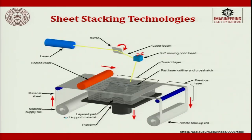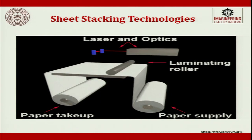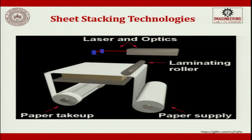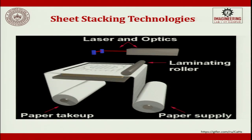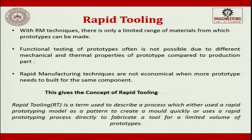Excess material in the layer remains in place to support the part being built. Sheet stacking technology was earlier popular but is now slowly being phased out. The laser comes out, hits a galvo, then an x-y stage, and engraves the layer information on the table to produce the output. This is the paper supply reel and paper take-up reel visible in the animation.